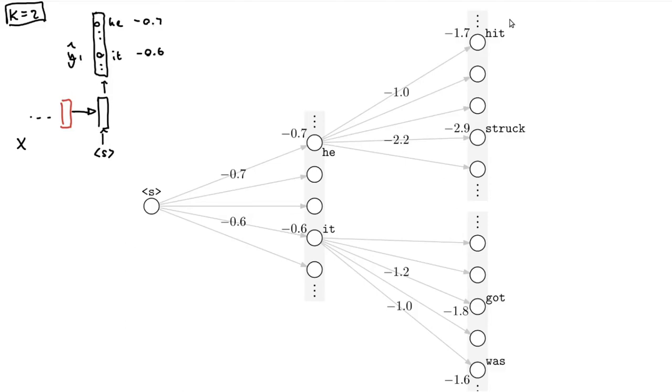But now what you do, pay attention, is you keep track of both of these, he and it. And you make little copies of your decoder. One of the copies will feed in he to the next time step. The other copy will feed in it. And just pay attention here. The moment you feed in a different thing at the next time step, all the rest of the decoder steps actually change. Your weights and stuff stay the same, but the vectors will all be different.